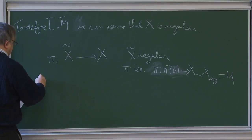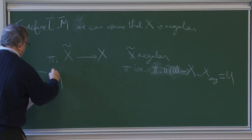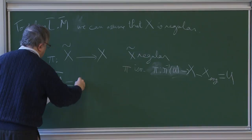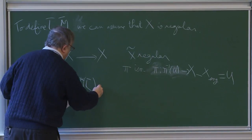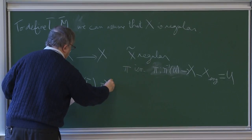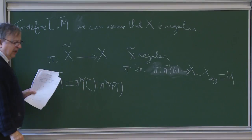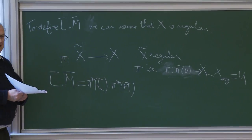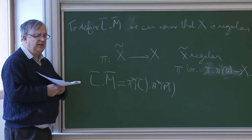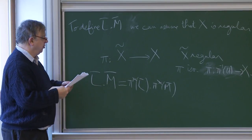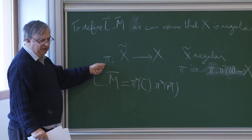We say the following: L-bar dot M-bar is by definition pi^*(L-bar) dot pi^*(M-bar). The intersection on the resolution of X. And we have to show, after defining this number, that it does not depend on pi.